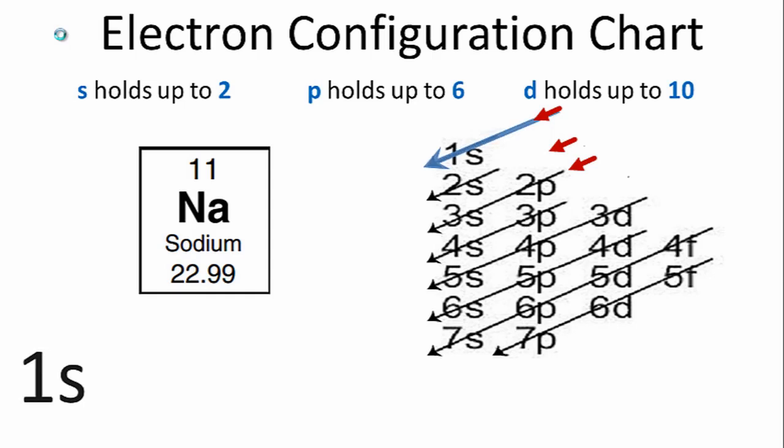We'll start by going down the first row. S orbitals can hold up to 2 electrons, so we'll put a 2 after the 1s.